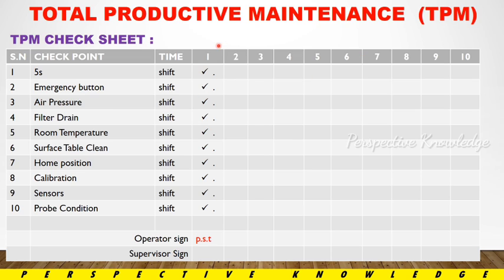So the TPM check sheet — there is a process. We will check the process and run it. The TPM check sheet is followed across all industries. This industry is farmed but there is a procedure, so this TPM check sheet — you can now run some. As you can see, a sample of this check sheet shows you where and how to prepare it.